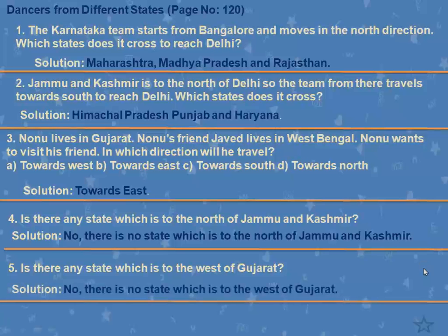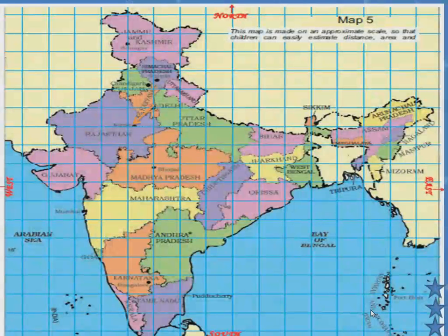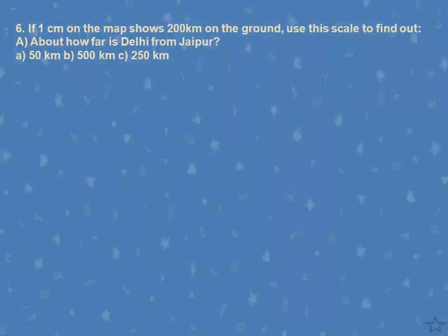Next question: If 1 centimeter on the map shows 200 kilometers on the ground — this is the scale. 1 cm on the map equals 200 km on the ground. Use this scale to find out how far Delhi is from Jaipur. This is Delhi and this is Jaipur. You keep the scale and measure the distance. Roughly, the distance between Delhi and Jaipur on the map is about 1.25 centimeters.